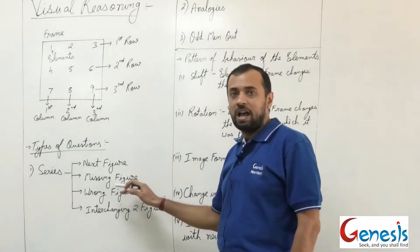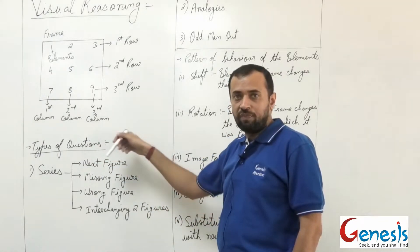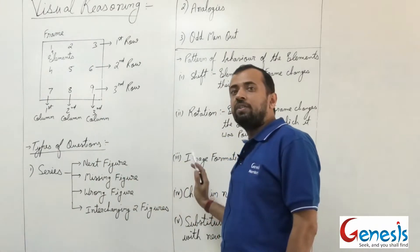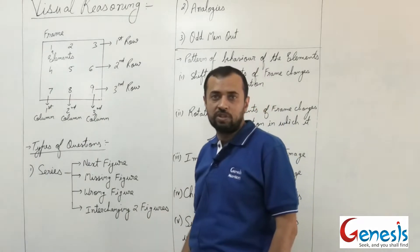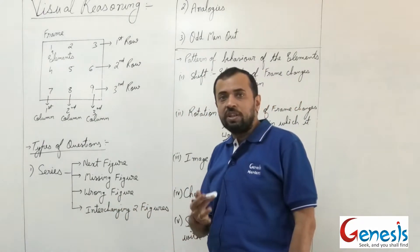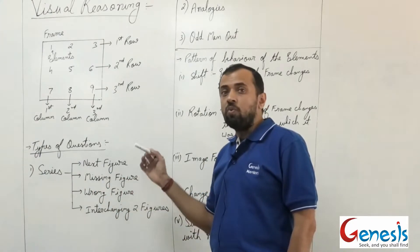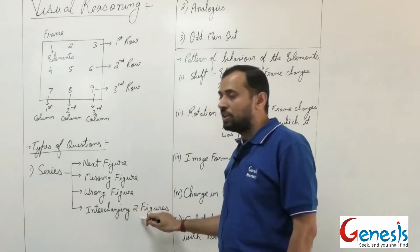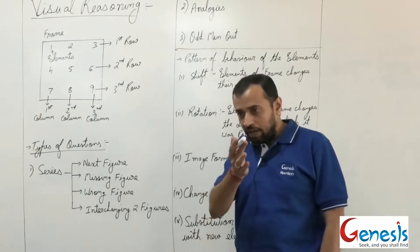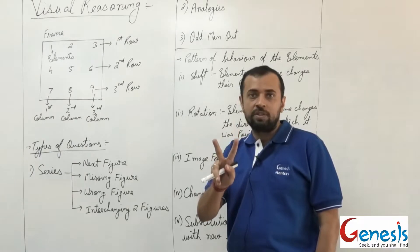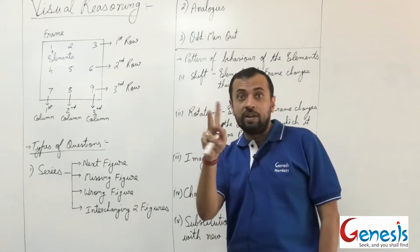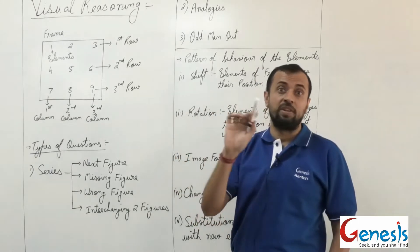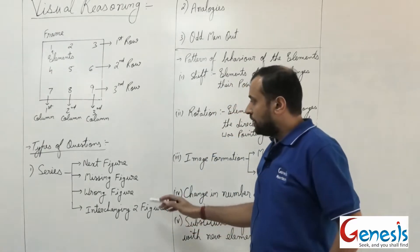There could also be a missing figure — not necessarily the last figure. Out of four or five question figures, a question mark might appear in the third picture, and you identify it from the five options. Then there is the wrong figure type, where one frame in a series of five does not follow the series. Finally, there is interchanging two figures, where two frames are not in their correct position and interchanging them forms a logical series.